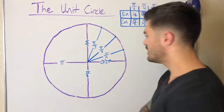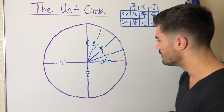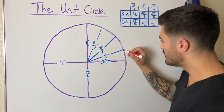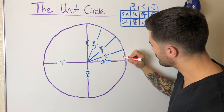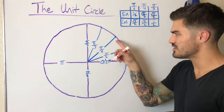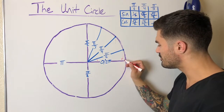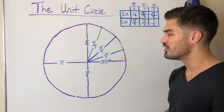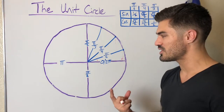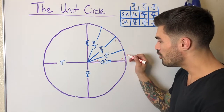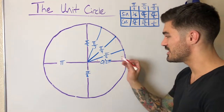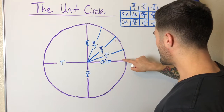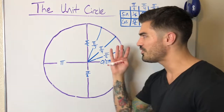Think about this: if this is a 30-degree angle, you can think of a triangle positioned inside the unit circle. Draw a line down and it becomes a 90-degree angle — you have a 30-60-90 triangle inside the circle. We know those side lengths, and that's where we get the sine and cosine values. Sine is y over r, and cosine is x over r.